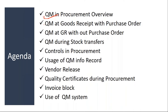We will see how quality functions are handled during goods receipt with a purchase order, when material is received against a purchase order. Then we will see quality management at goods receipt without a purchase order — sometimes they procure material without a purchase order. Then how to do quality inspection during that time. Then QM during stock transfers, when stock is moved from one plant to another or one storage location to another within the same plant, and how to do quality inspection.